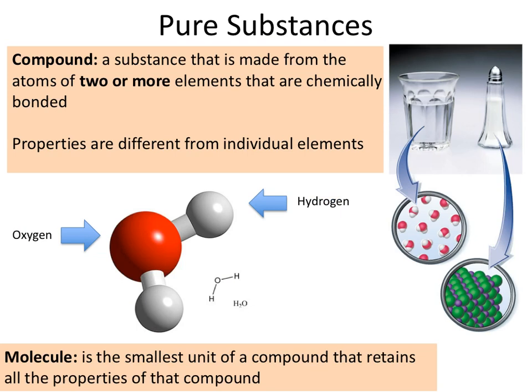The other branch of pure substances is represented by compounds. A compound is a substance made of two or more different types of elements that are actually bonded to each other. What you need to understand about compounds is that they're going to have properties unique to the compound itself, while the individual elements that make up the compound would have totally different characteristics and behaviors.